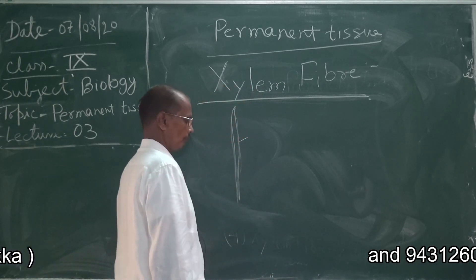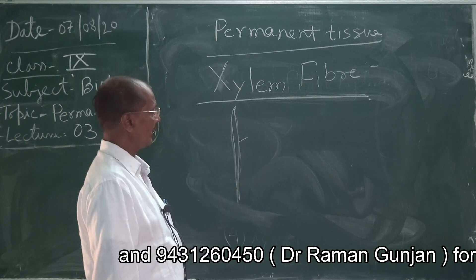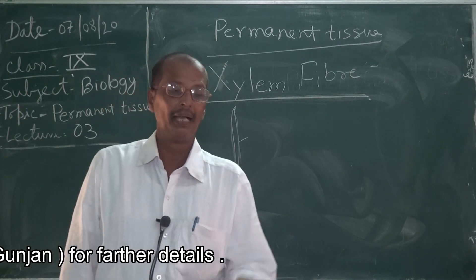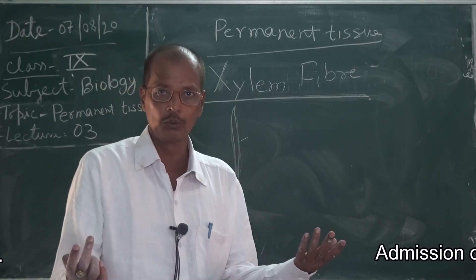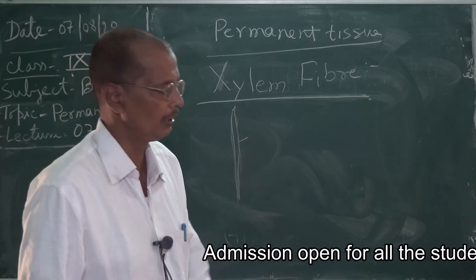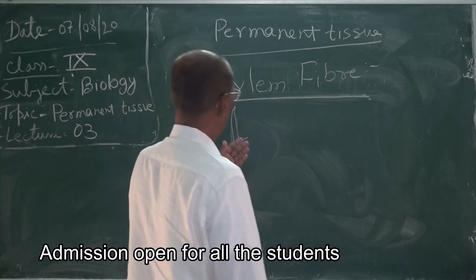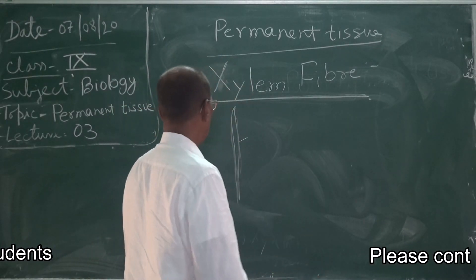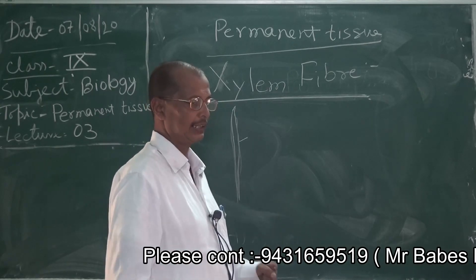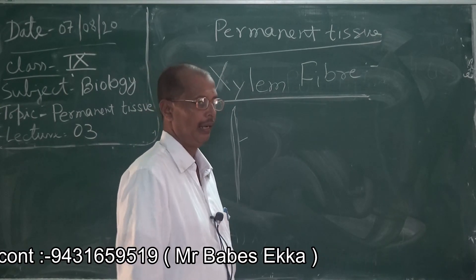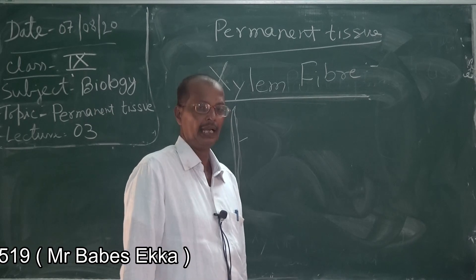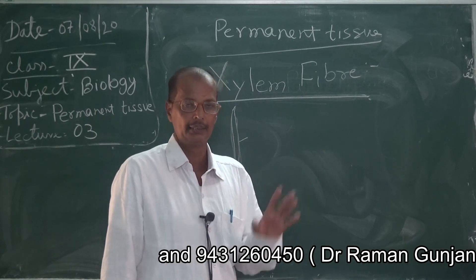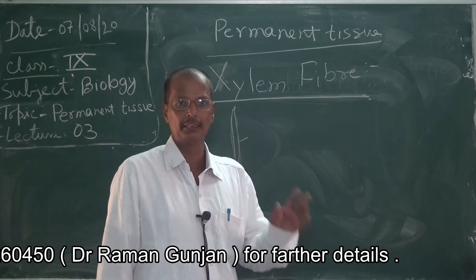Now a question arises: what are the main functions of xylem? One function, already known to you, is that xylem is meant for the upward movement of water. Not only this — as it is made up of very strong cells like xylem fiber, it also provides mechanical support to the plant. This is how our xylem is completed.